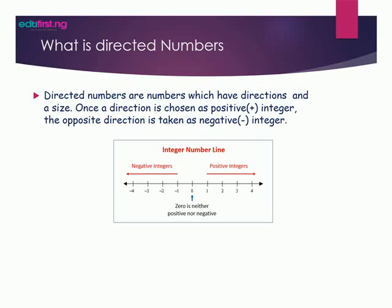Now, what is a directed number? Directed numbers are numbers with directions and sides. Once a direction is chosen as a positive integer, the opposite direction is chosen as a negative integer.